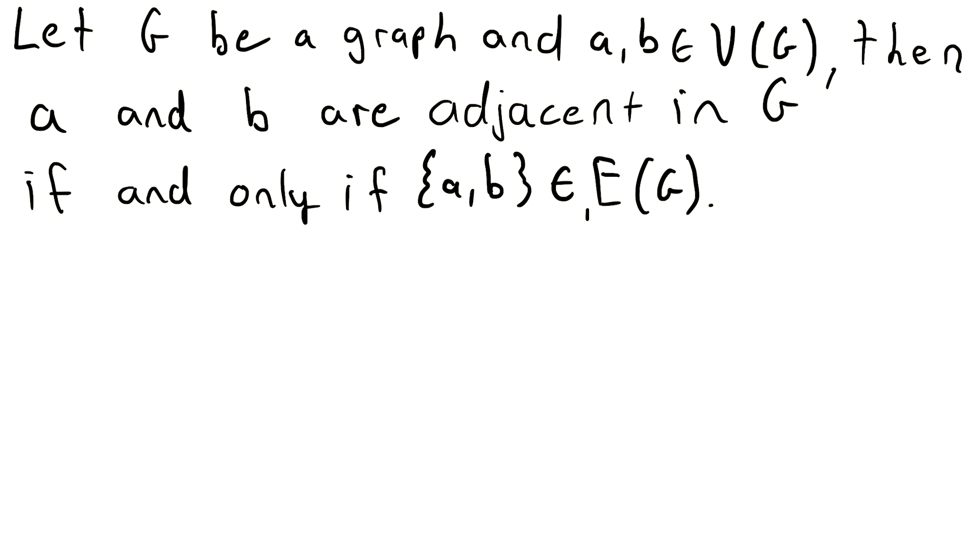And I should also mention that the edge set of G, that is a set that consists of two-element subsets of the vertex set like that. But edges are often written just like this instead, simply because it's easier and it conveys the same information, that it's an edge joining A and B.